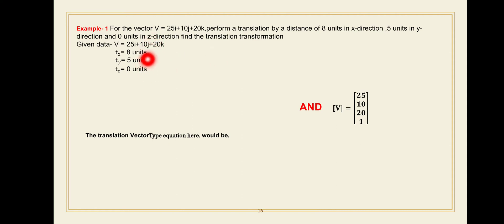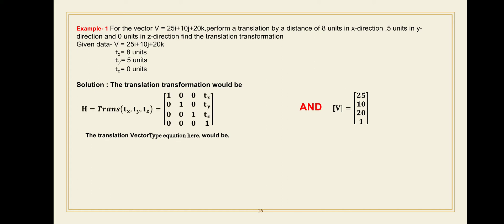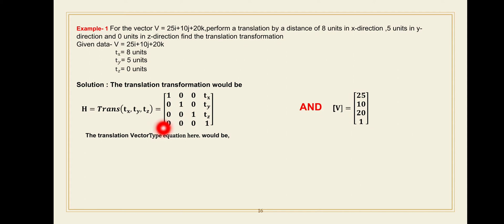So the given data is: tx equals 8, ty equals 5, tz equals 0. The next step is the problem solution. The translation transformation formula is: p-dash equals p plus t. The homogeneous translation matrix H is: 1 0 0 tx / 0 1 0 ty / 0 0 1 tz / 0 0 0 1. Now put in the values of tx, ty, and tz.